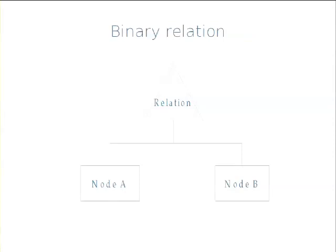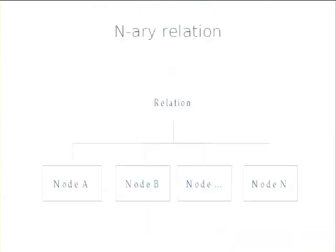An example of a symmetric relationship would be a group of siblings, where the relationship between, say, three siblings isn't going in any particular direction — they just have this relationship and are all equals within it. The storage model for this is consistent, so if you want to link more — for example, if you have three siblings, or seven, or even more of a completely different kind of object — you can just link as many of them as you want into this relation.